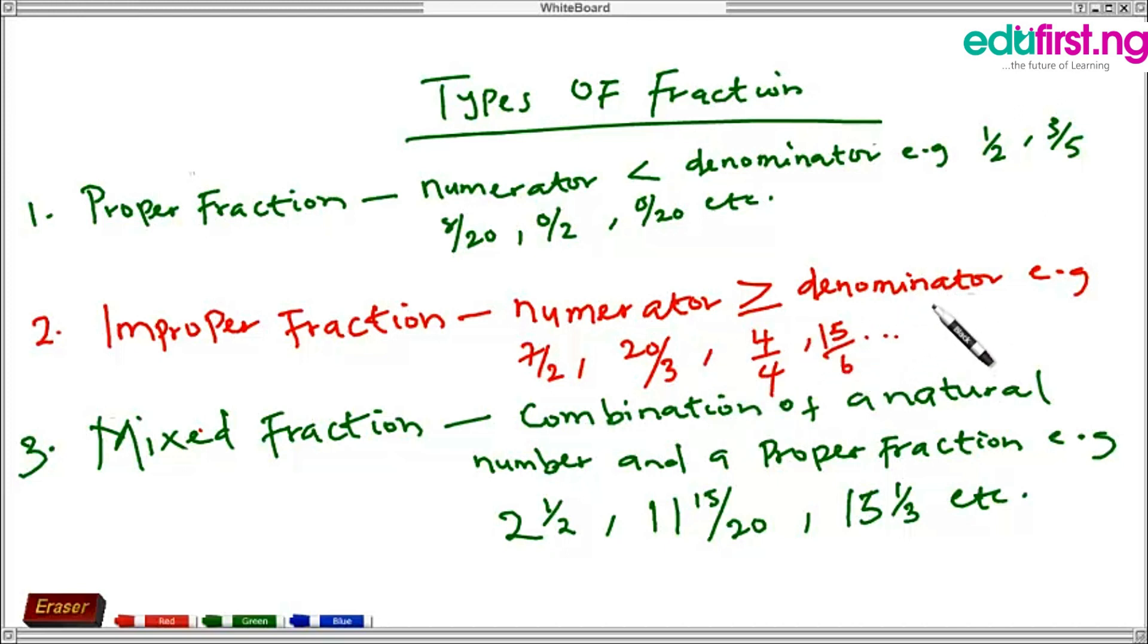Mind you, fractions such as 0 over 0 is not obtainable. The reason is because we cannot divide any unit into 0 parts, hence this is not existing.